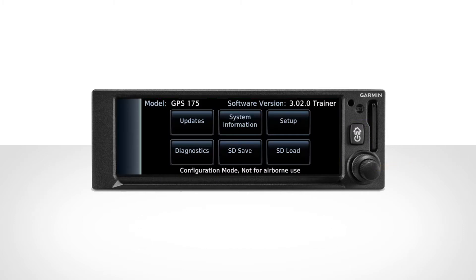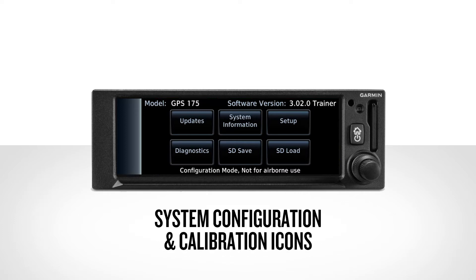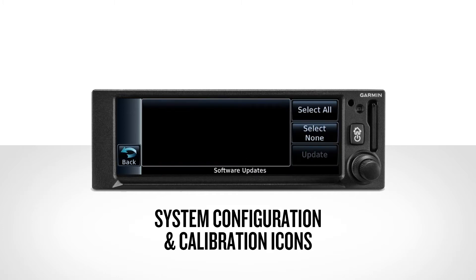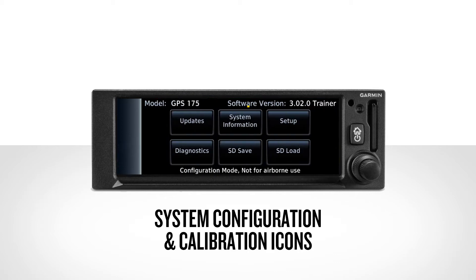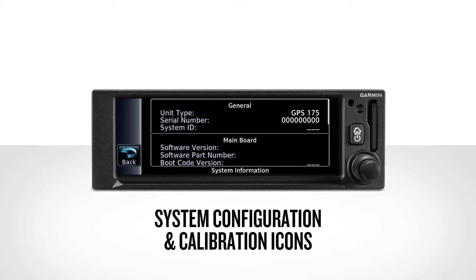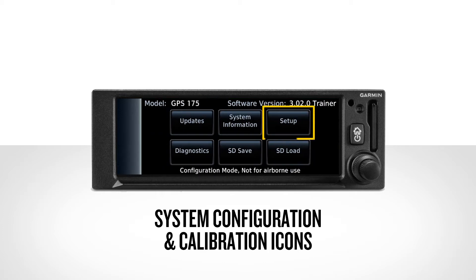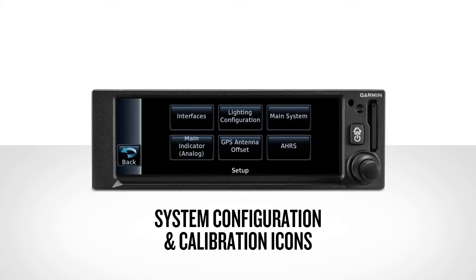The configuration home page contains various icons used for system configuration and calibration. Depending on your interfacing options, not all icons may be applicable to your installation. The Updates page is used when system software is updated and usually appears after a software loader card is inserted into the SD card slot and power is applied to the navigator. The System Information page displays general and board-specific information. The Setup page is used to access the different subpages in order to set up the navigator for a specific installation.